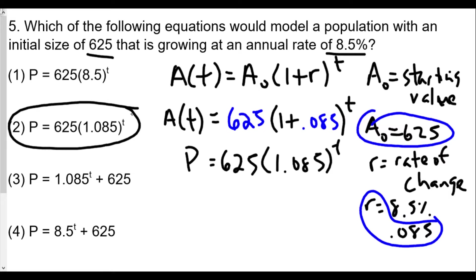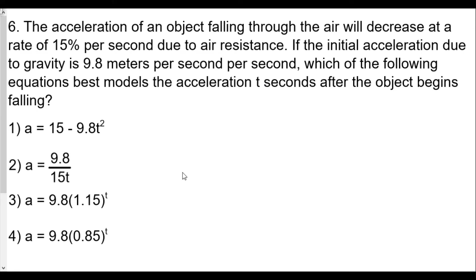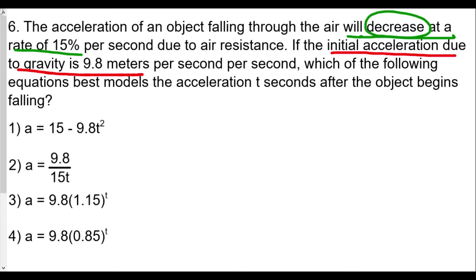If we are increasing, the rate is a positive number; if we are decreasing, the rate is a negative number. Question Number 6: the acceleration of an object falling through the air will decrease at a rate of 15 percent per second due to air resistance, and the initial acceleration due to gravity is 9.8 meters per second squared.